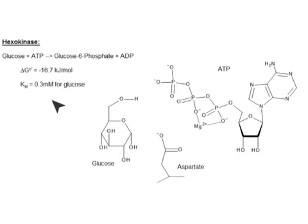As we learned, hexokinase has a rather low KM, which means it binds really tightly to glucose.